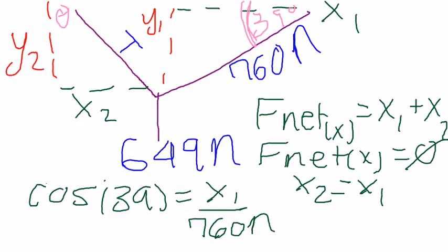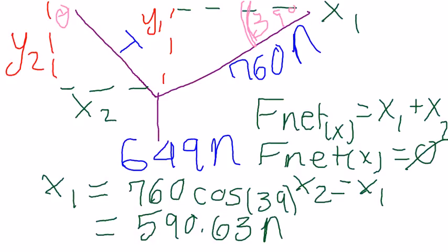We set it up as cosine 39 degrees equals X1 over 760 newtons. To get X1, we multiply by 760 newtons. This equals 590.63 newtons. Since X1 equals X2, we now know X2 equals the same amount.